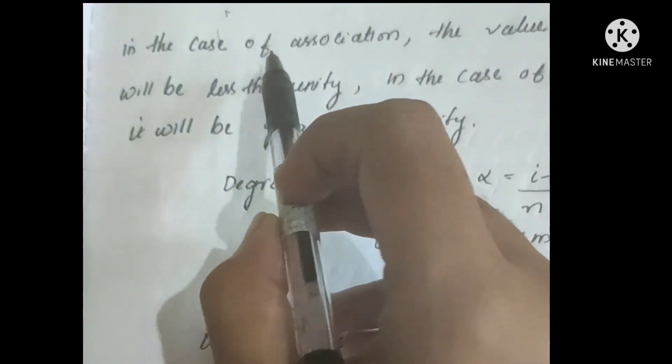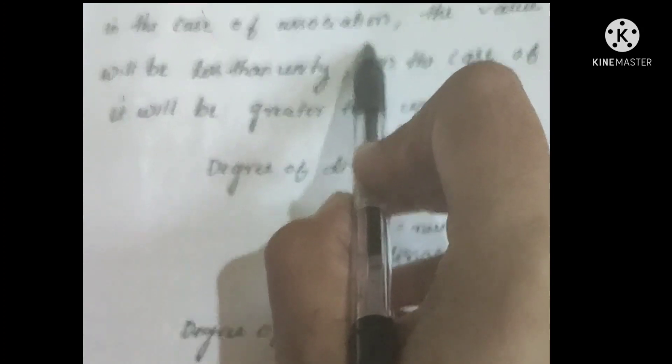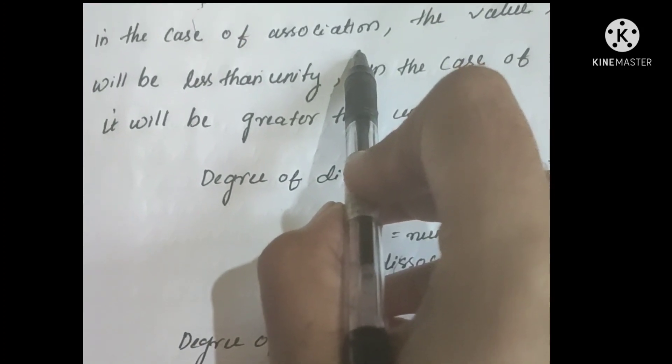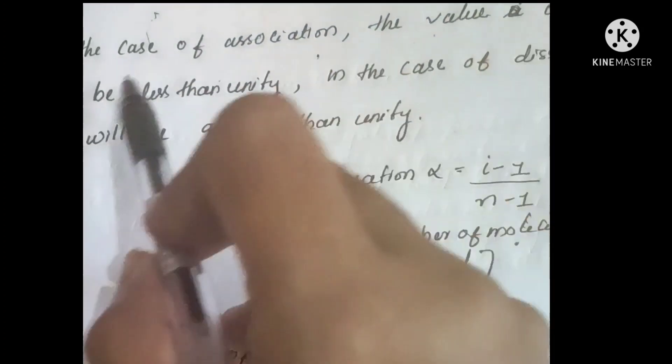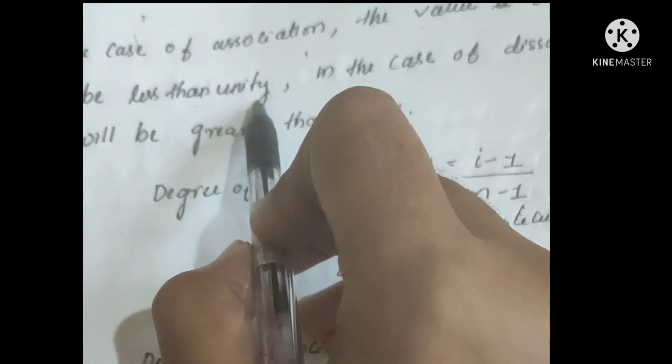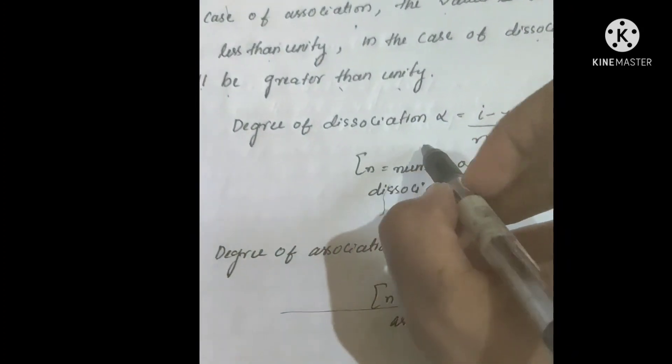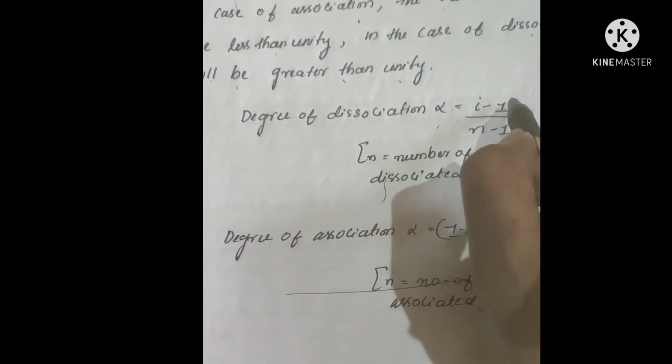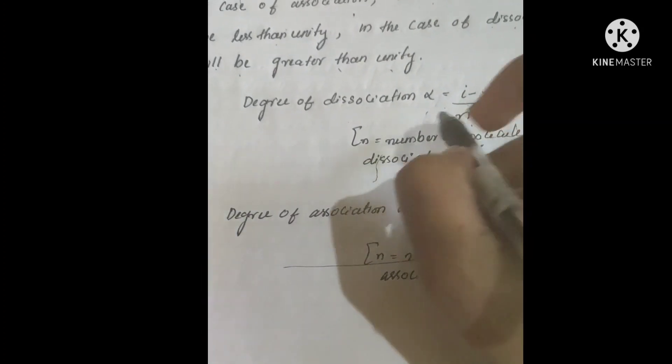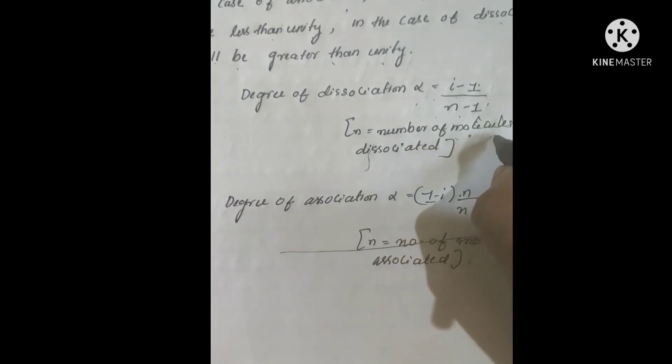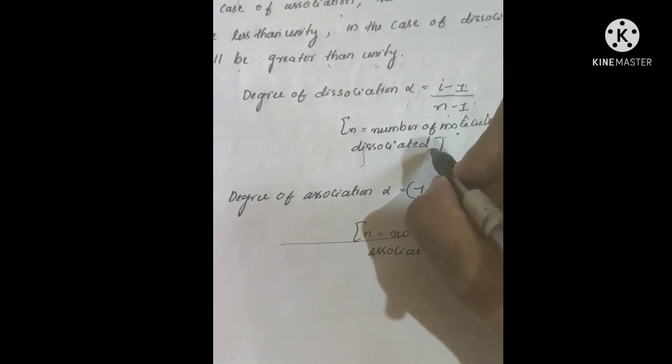For example, in the case of association, the value of i will be less than unity. And in the case of dissociation, it will be greater than unity. Degree of dissociation alpha equals i minus 1 divided by n minus 1, where n is the number of molecules dissociated.